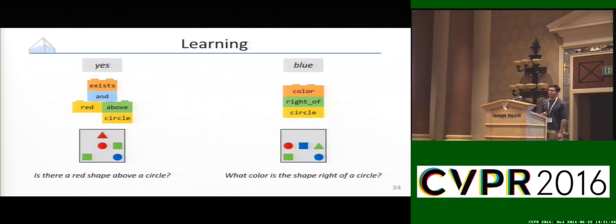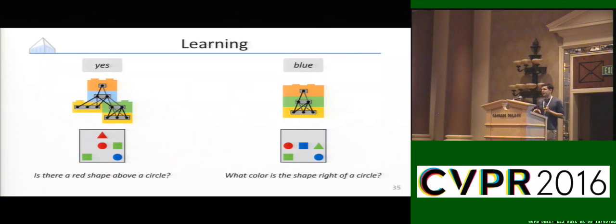We actually have some follow-up work where we're learning that structure chooser jointly with the rest of this process. But for now, let's assume these structures are fixed and given to us by some kind of natural language parser. What we're left with is a learning problem that looks like this. We have our question, we have our image, we have our question-specific neural network structure built up from a bunch of modules, and then we have the answer.